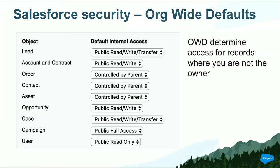Another important setting in your Salesforce org are the org-wide defaults, commonly referred to as OWD. Org-wide defaults determine access for records where the user is not the owner. For each object type, you can specify whether that object is public read-write, public read-only, private, and there are lots of different settings. This works on an org-wide basis — these are rules to determine how people access objects where they are not the owner.